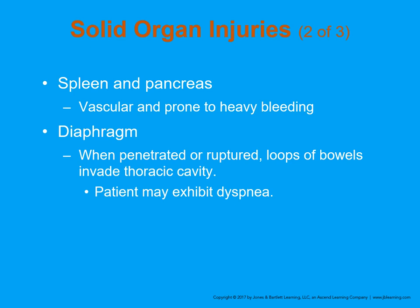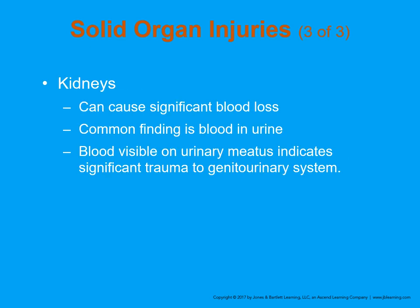The diaphragm, if ruptured or if there's penetrating trauma around it, can cause significant breathing compromise, as it is the major muscle that controls our respiration. The kidneys are located in the lateral back of the patient. If a patient is complaining of pain in their left or right flank and there is blood in their urine, we should be concerned about the possibility of a kidney injury.